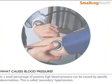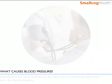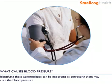In a small percentage of patients, high blood pressure can be caused by specific abnormalities. This is called secondary hypertension. Identifying these abnormalities can be important, as correcting them may cure the high blood pressure.